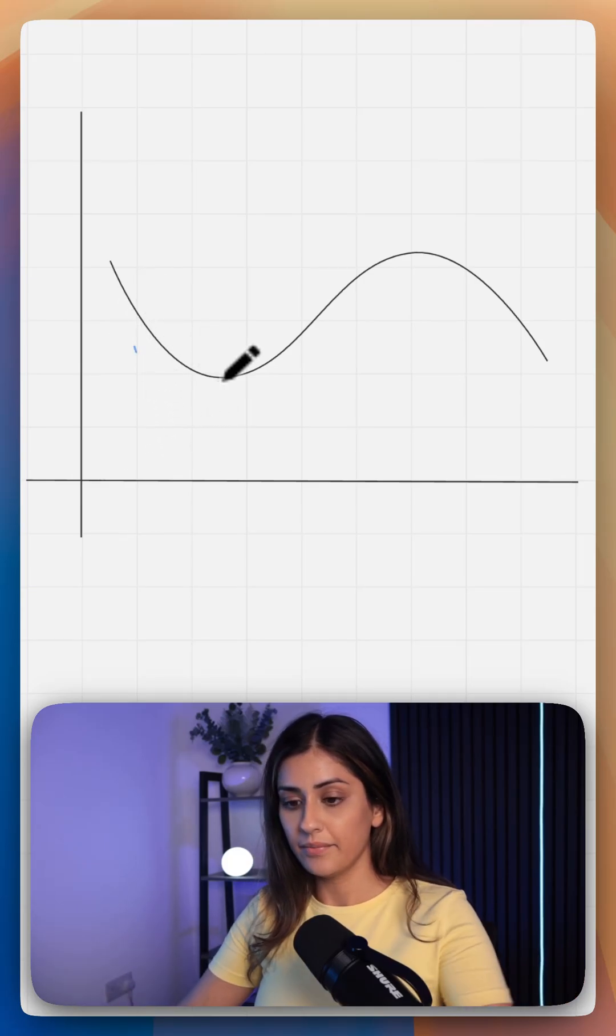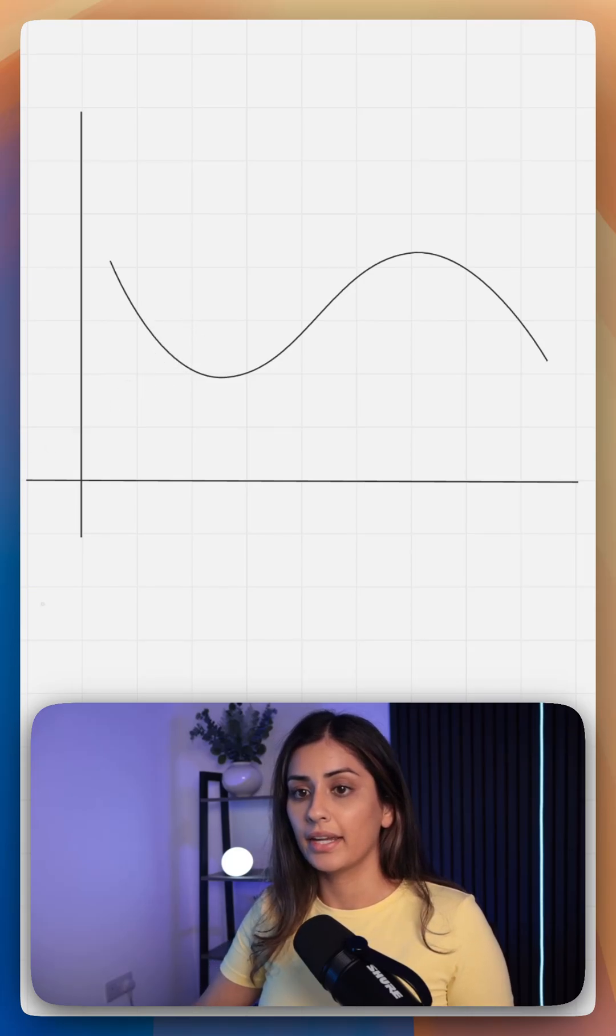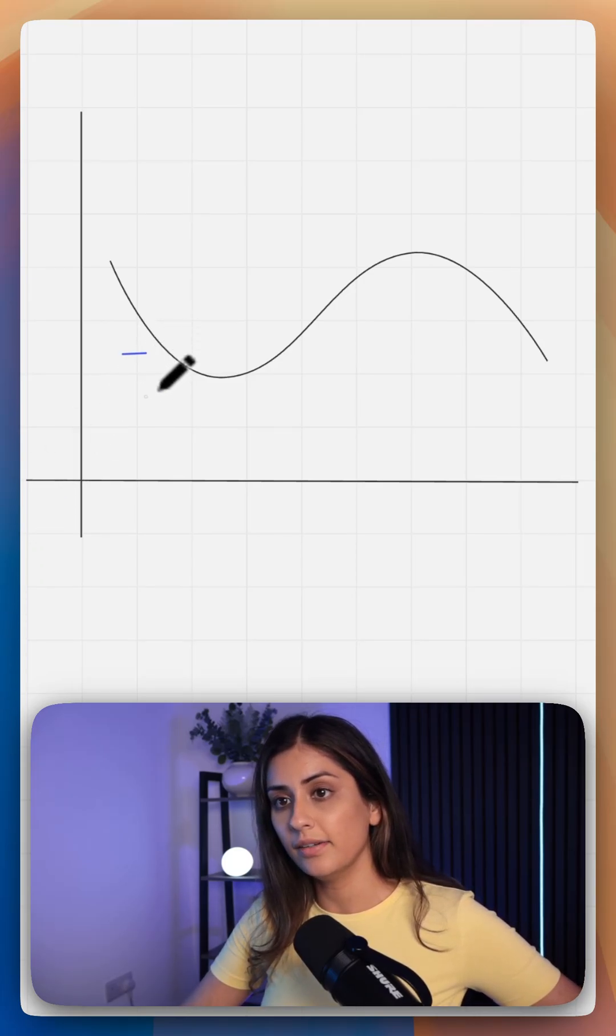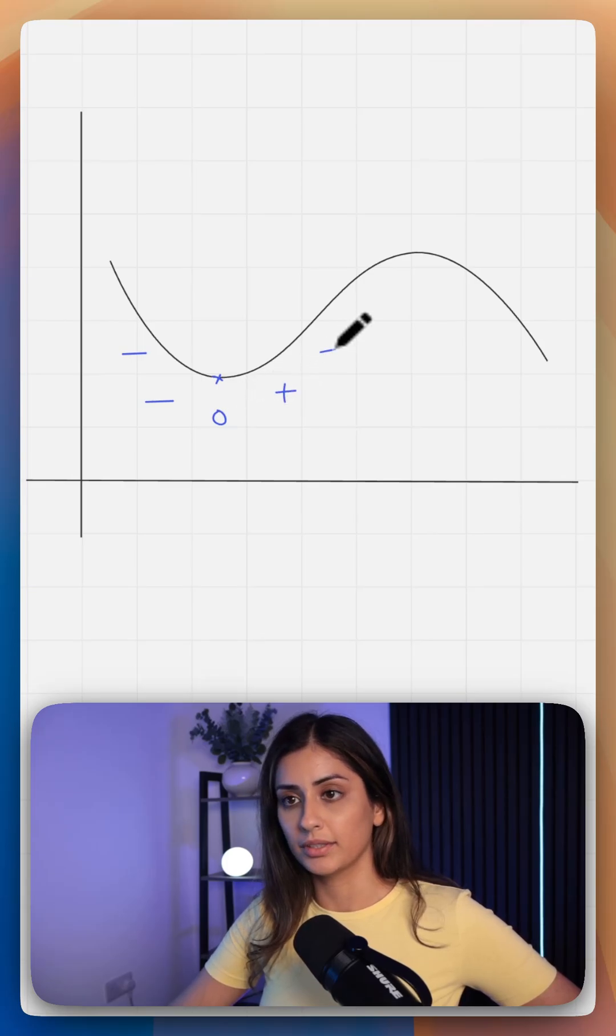So here you can see your gradient is going down. It's negative here. At this point, it becomes zero and then it changes to positive.